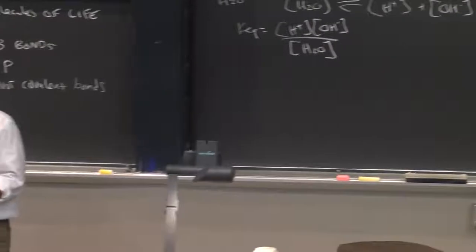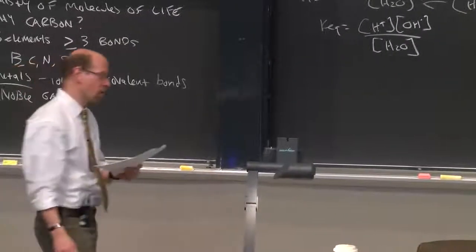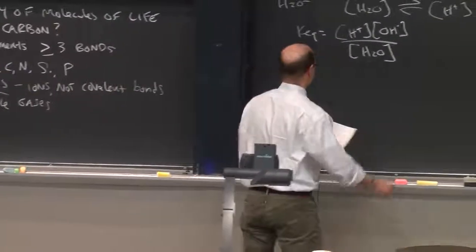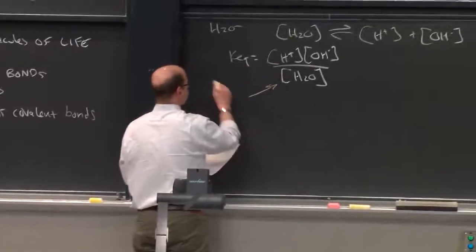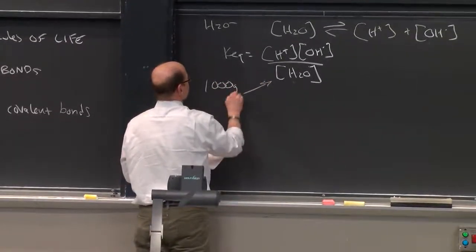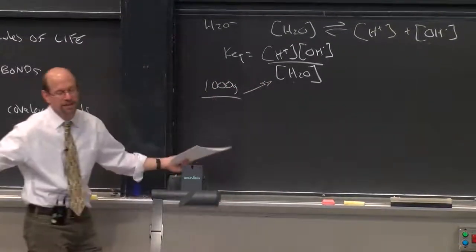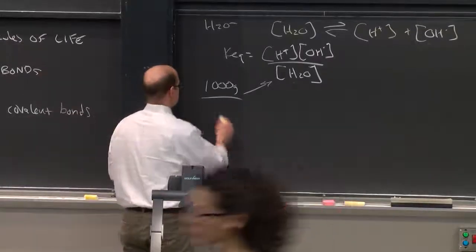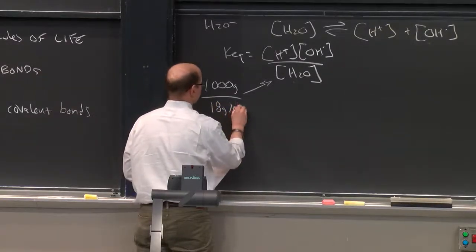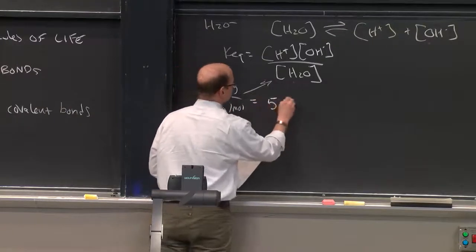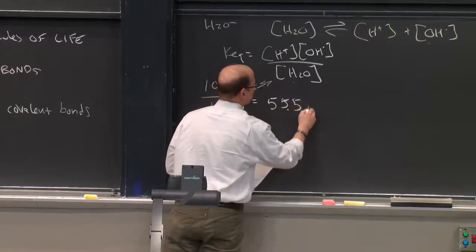That is how many moles of water there are in one liter of water, which is simply 1,000 grams divided by the molecular weight of water, 18 grams per mole. So this is 55.5 molar.